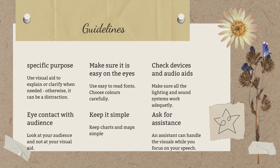Always check your devices and audio aids — the lighting and the sound system — ahead of time. Always remember to have eye contact with your audience as you are sharing your visuals. A little glance to the screen and then a glance to your audience; keep it well balanced. Keep everything simple, especially maps and charts — you do not want to distract your audience trying to figure things out. And finally, don't be shy to ask for assistance. Whether it's flipping the chart, writing on the board, or any technological assistance, ask for it. There is always someone in the audience who will be happy to help you out.